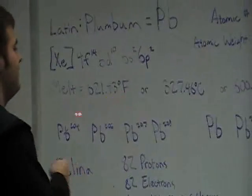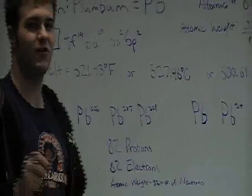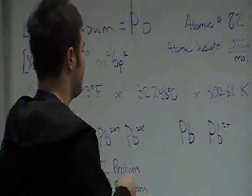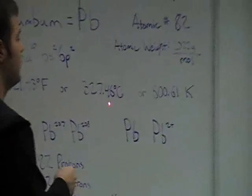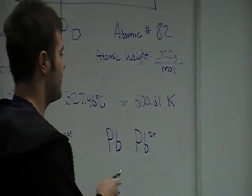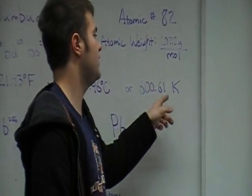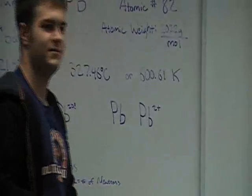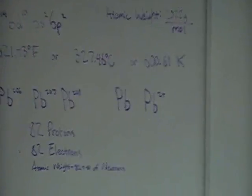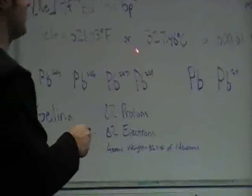I need to finish my Science Olympiad thing. We'll all get back to Science Olympiad once we're done with this. Its melting point, which by the way is important for today: 621.43 degrees Fahrenheit, 327.46 degrees Celsius, or 600.61 degrees Kelvin. If you're in a real chemistry class, you'd be using Kelvin, not Celsius.